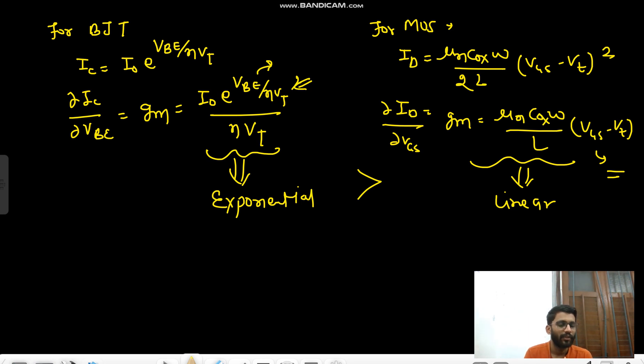Right, so what will you say? The gm of BJT is higher and gm of MOSFET is lesser. Why? Because here we are having exponential expression and here we are having linear expression.